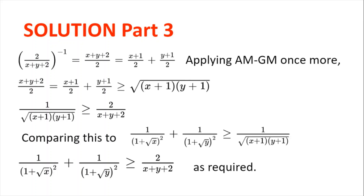Again, because x and y are positive reals, the square root of (x plus 1)(y plus 1) and (x plus y plus 2)/2 are both positive. So we get 1 divided by the square root of (x plus 1)(y plus 1) is greater than or equal to 2 divided by (x plus y plus 2). Combining this with our earlier result, we can see that 1 divided by (1 plus square root of x) squared plus 1 divided by (1 plus square root of y) squared is greater than or equal to 2 divided by (x plus y plus 2), which was what we had to prove.